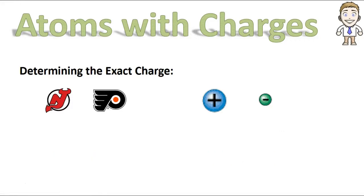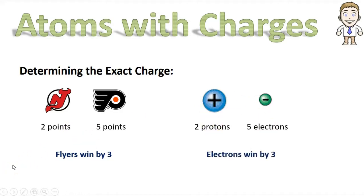In a different example, what if the score of the hockey game was two to five, everyone could say the Flyers win by three. Well, if you had the same score, protons versus electrons, and there's five electrons, everyone could say the electrons win by three. The only jump now is if the negative team wins by three, you should be able to call that atom a negative three charged atom.